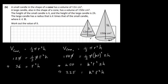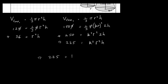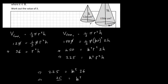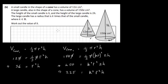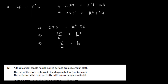We now have two simplified equations: r²h = 36 and k²r²h = 225. Since r²h appears in both, we can substitute: 225 = k² × 36. Therefore k² = 225/36 = 25/4, giving k = √(25/4) = 5/2 = 2.5.